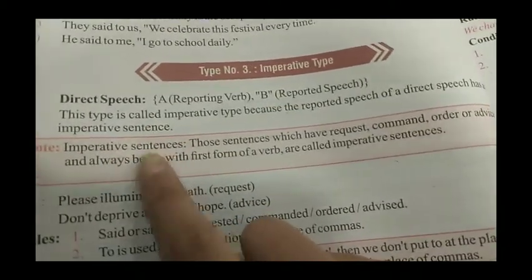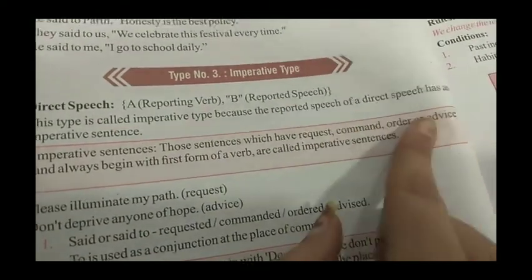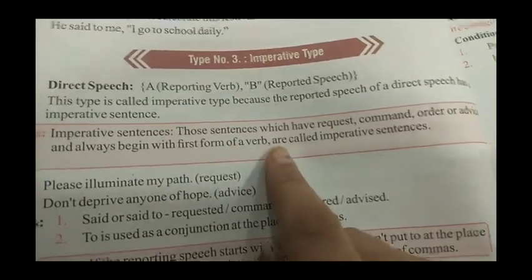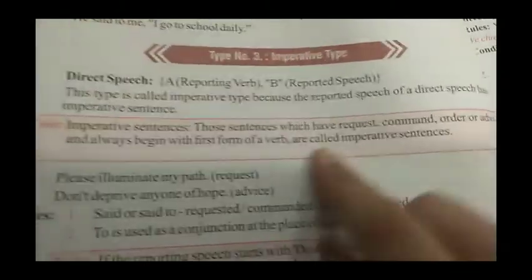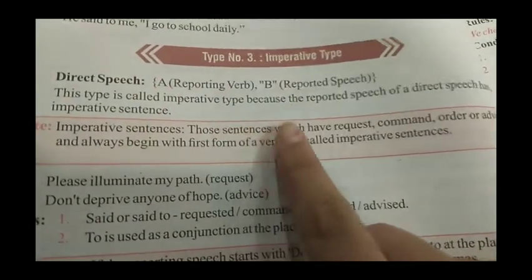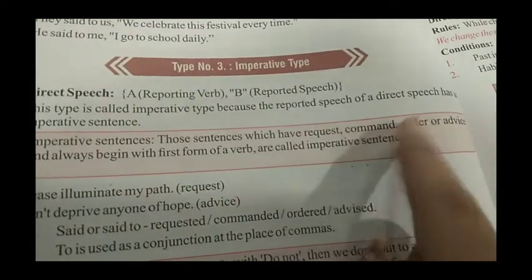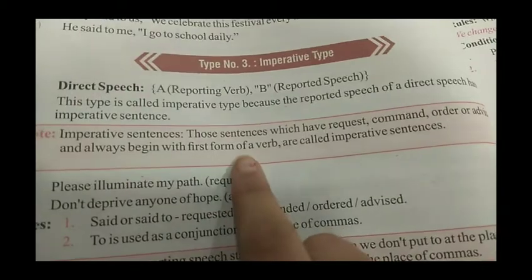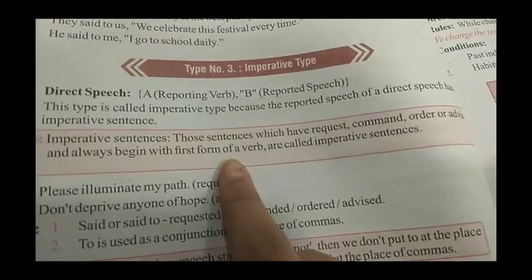Imperative sentence क्या होता है? Those sentences which have request, command, order और advice, and always begin with the first form of verb, are called imperative sentences. So you have to remember that imperative sentence वो होते हैं जिनमें request, command, order, advice हो और वो हमेशा first form of verb से ही शुरू होते हैं।